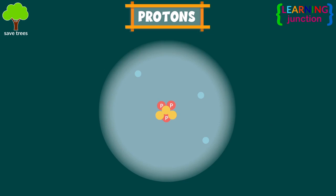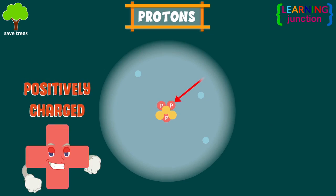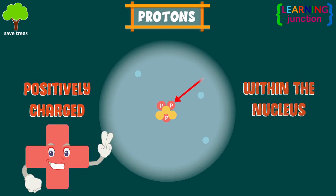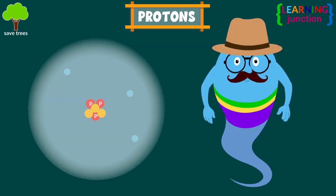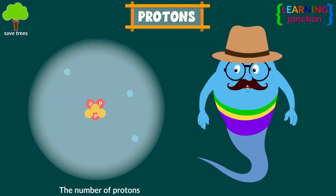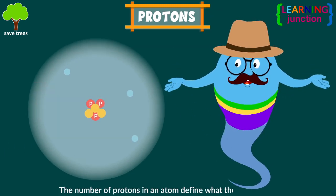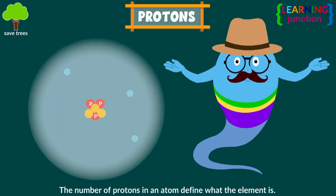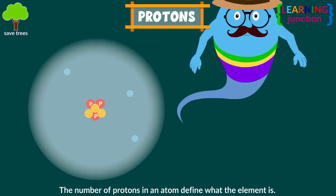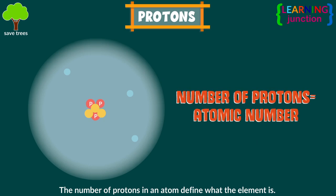Protons. A proton is a positively charged particle found within the nucleus of an atom. The number of protons in an atom defines what the element is. This is referred to as the atomic number of that element.